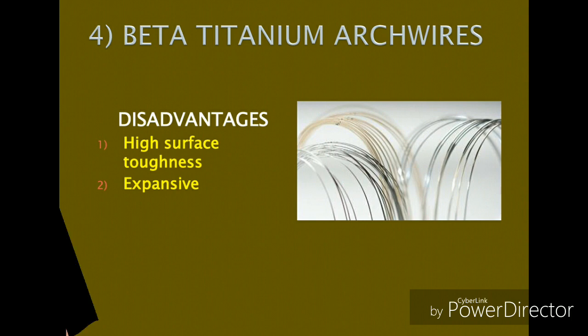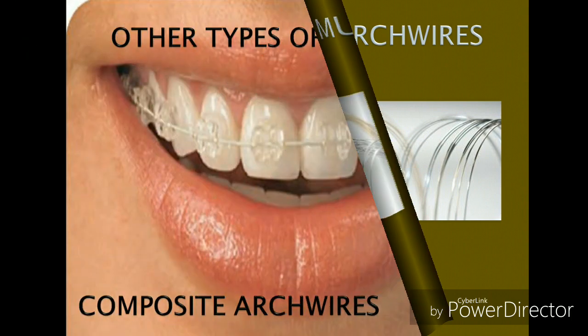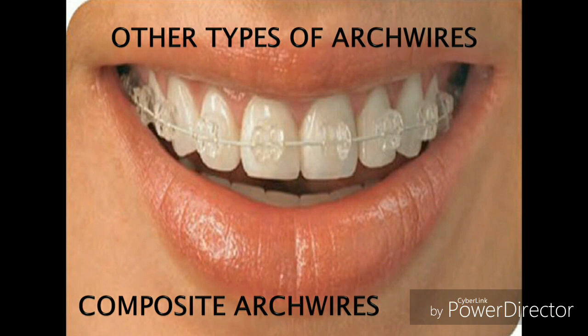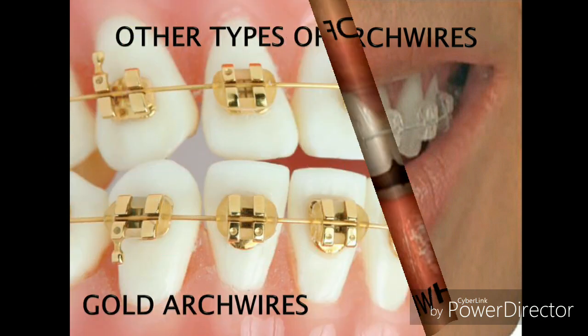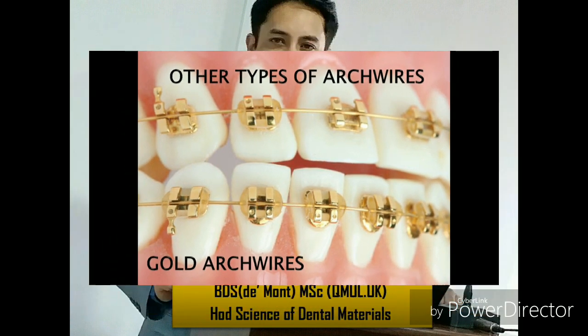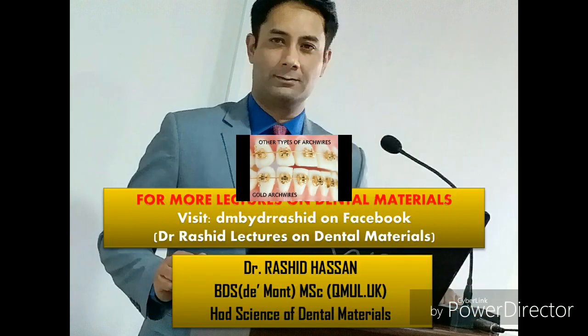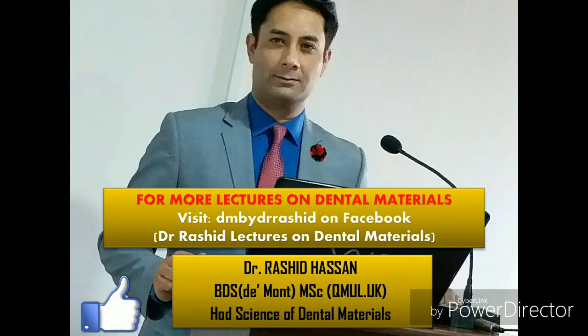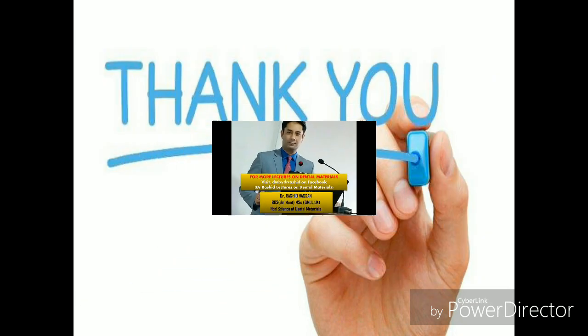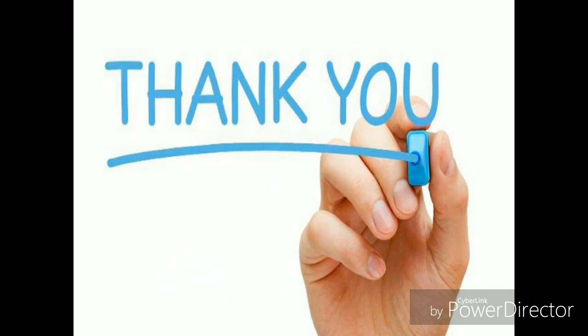Besides being expensive, TMA has a disadvantage of high surface roughness, which can cause high frictional forces. Other types of arch wires used in orthodontics include composite arch wires, formed by adjusting ceramic-to-polymer proportions, and gold arch wires. This concludes the brief lecture on orthodontic arch wires.